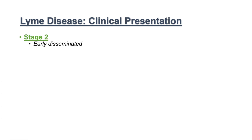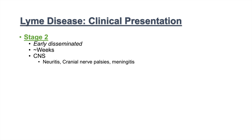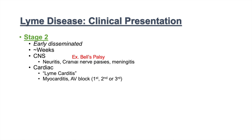Stage two is considered an early disseminated stage, usually occurring within weeks after a tick bite. There are central nervous system symptoms such as neuritis, cranial nerve palsies, and meningitis. There are also cardiac symptoms — we see Lyme carditis occur in this stage, which includes myocarditis and AV blocks, which could be first degree, second degree, or even third degree block.